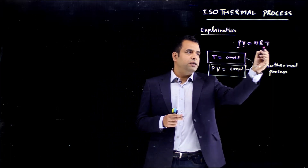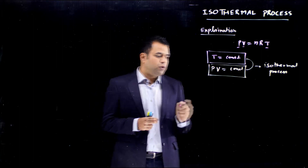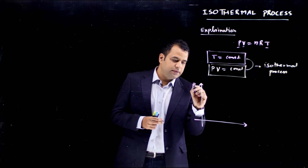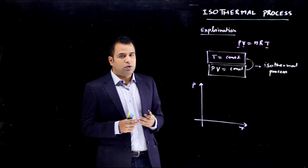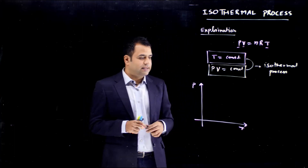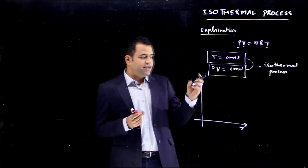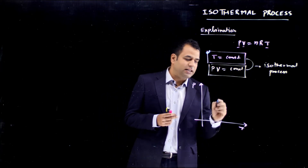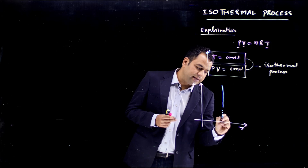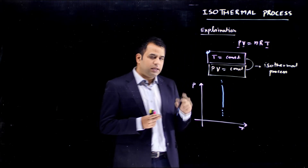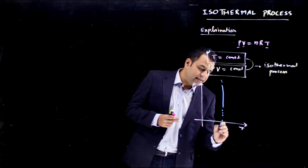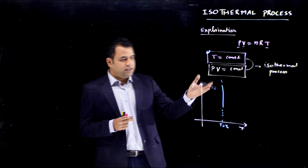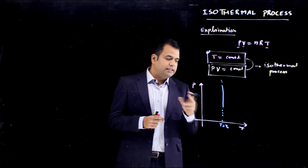We will make the graph using these three variables. The first graph we want to make is between pressure and temperature. I am putting pressure onto the y-axis and temperature onto the x-axis. In this equation, T is a constant. If you plot this isothermal process onto the P-T graph, it will show you a state line, and that state line will be parallel to the pressure axis. If you extend that state line, it will cut the temperature axis at some temperature T₀, which is a constant. This state line represents the isothermal process in the case of the P-T graph.